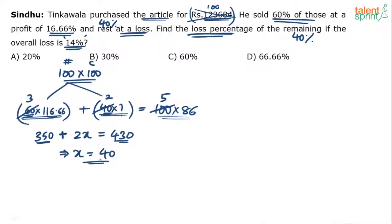Which means the remaining articles were sold at what price? 40 rupees each. This is the selling price of remaining 40% articles. What is the selling price? 40 rupees. 40 rupees is the selling price of remaining 40% of articles. If the selling price is 40 rupees where the cost price was 100, how much is the loss? 60% is the loss.